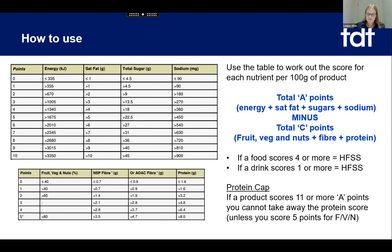You do the sum of those A-nutrient scores, and then take away the points scored for fruit, veg, nuts, fibre, and protein. You total up your score, and if your final score is four or more, your food is HFSS. If it's a drink and it scores one or more, it's HFSS.